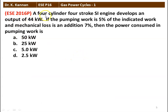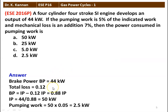The next question from the 2016 question paper. A 4-cylinder, 4-stroke SI engine develops an output of 44 kilowatts. If the pumping work is 5 percent of the indicated work and the mechanical loss is an additional 7 percent, then the power consumed in the pumping work is — options: 50 kW, 25 kW, 5 kW, and 2.5 kW. Brake power BP equals 44 kW. Total loss is 5 plus 7 equals 12 percent, i.e., 0.12. Since BP equals IP minus loss, and loss is 0.12 IP, we get BP equals 0.88 IP. So indicated power equals 44 divided by 0.88 equals 50 kW. The pumping work is 50 into 0.05 equals 2.5 kilowatts. The answer is 2.5 kilowatts, option D.